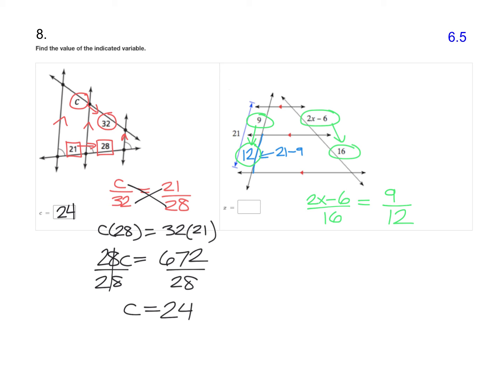And now we have a proportion that we can solve once again with the cross product property. So 12 times 2X minus 6 equals 16 times 9.